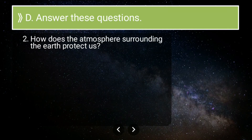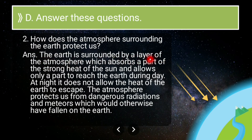Second long answer: how does the atmosphere surrounding the Earth protect us? The Earth is surrounded by a layer of atmosphere which absorbs a part of the strong heat from the Sun, allowing only part of it to reach the Earth during daytime. At night, the atmosphere does not allow the heat of the Earth to escape, because if it did, the Earth would become super cold, which is not good for living beings.